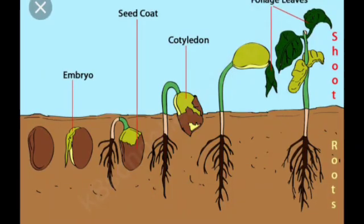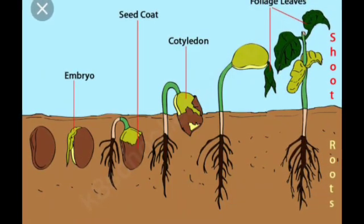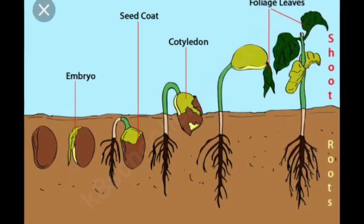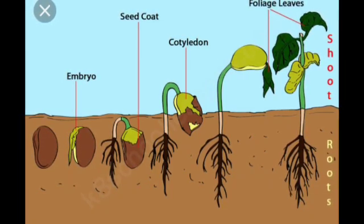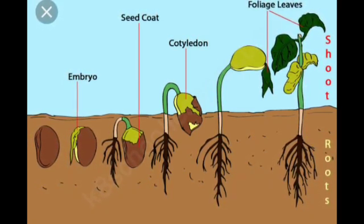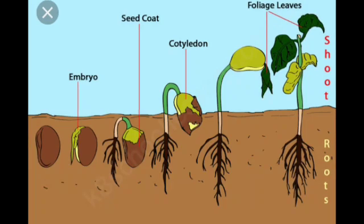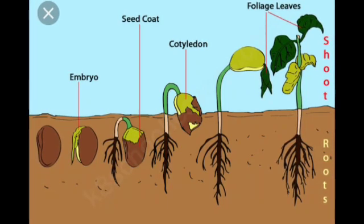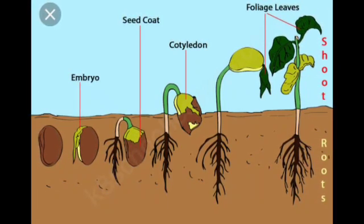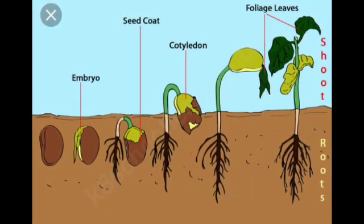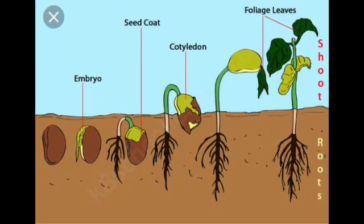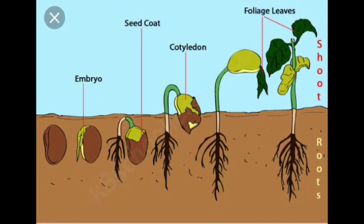Now we will talk about germination of a seed. Germination is the stages of the plant. The conditions needed for germination of the plant are water, warmth, sunlight, and soil.